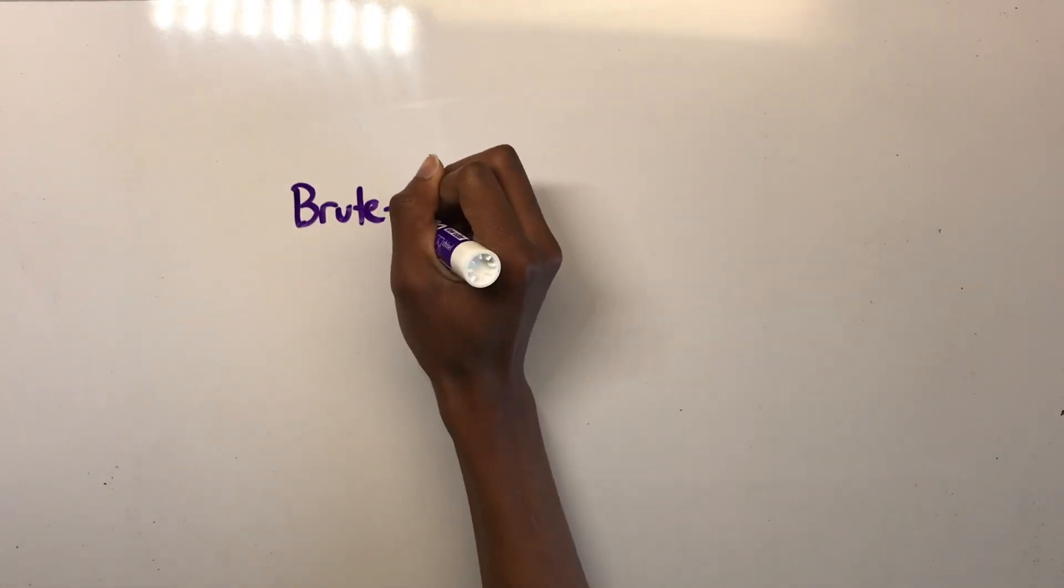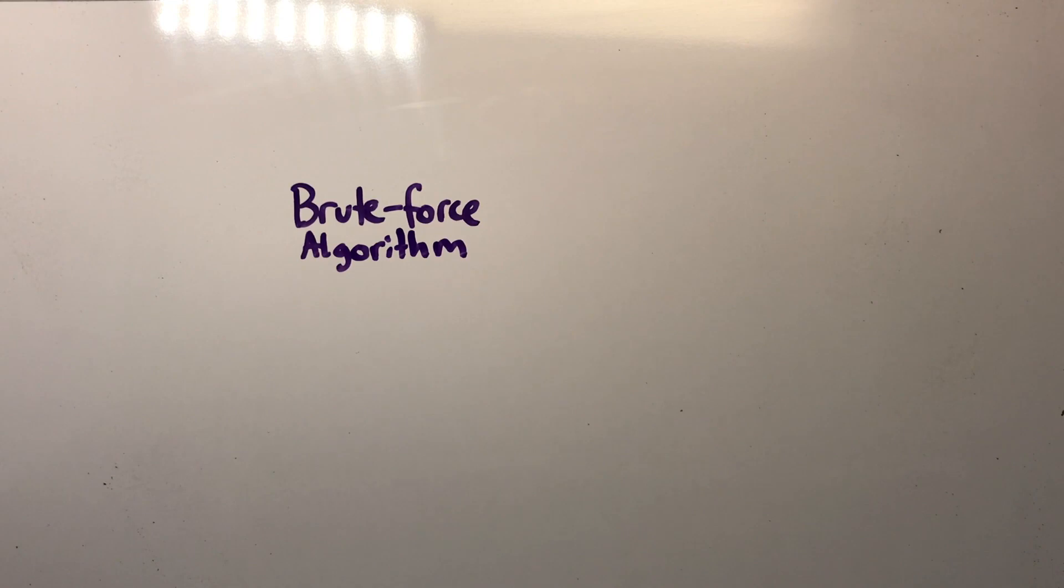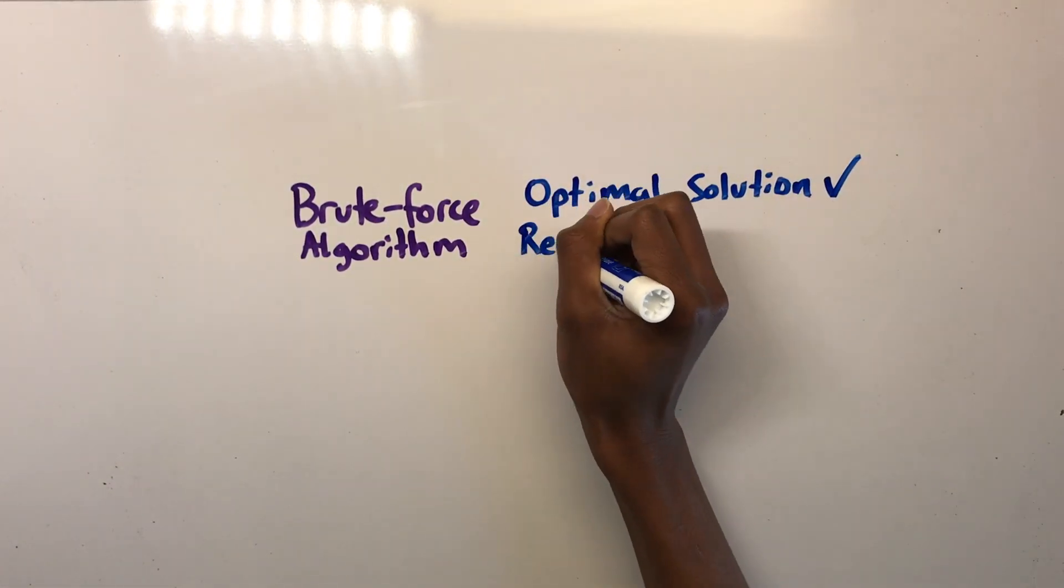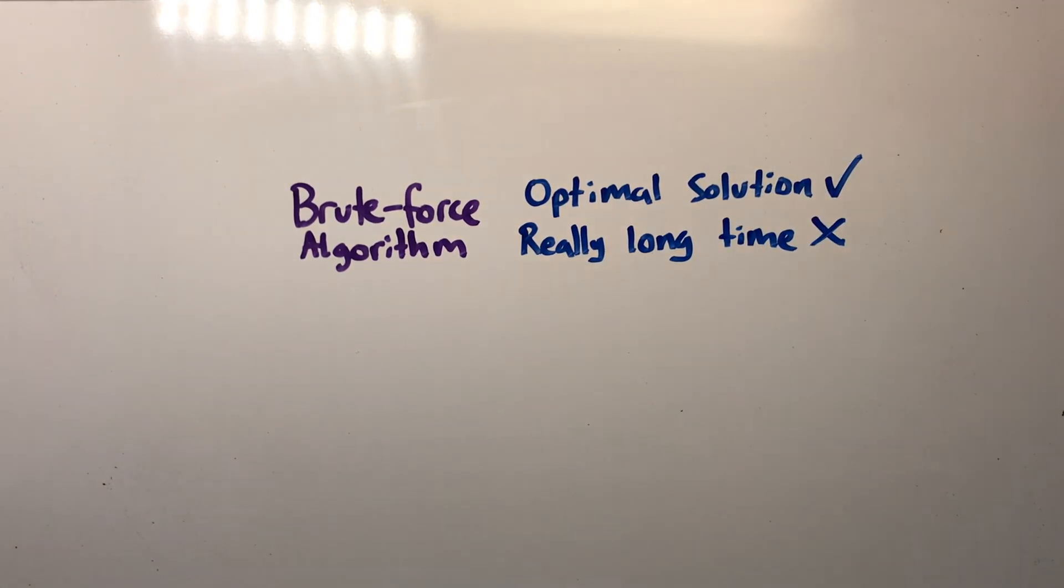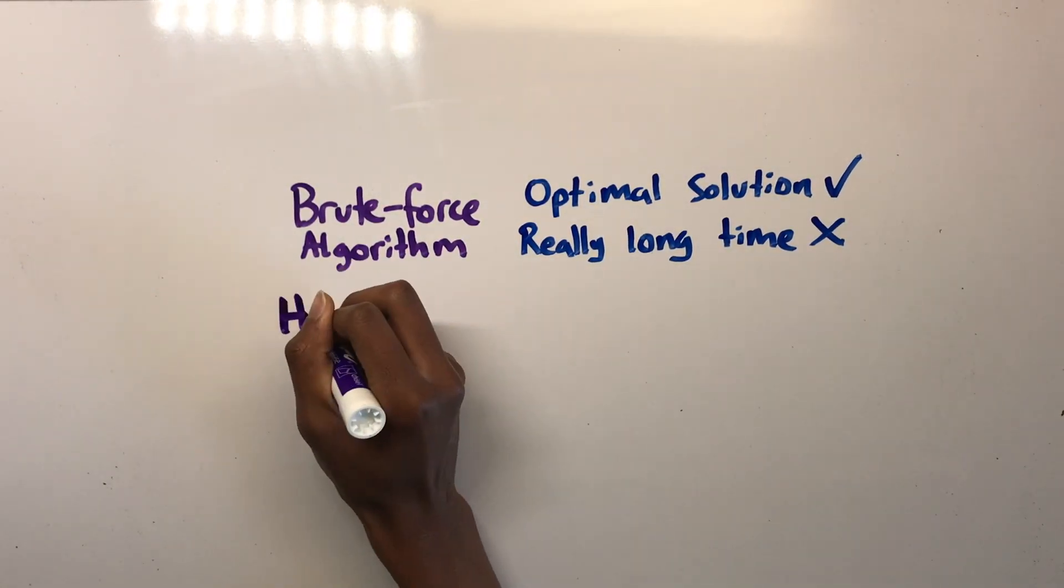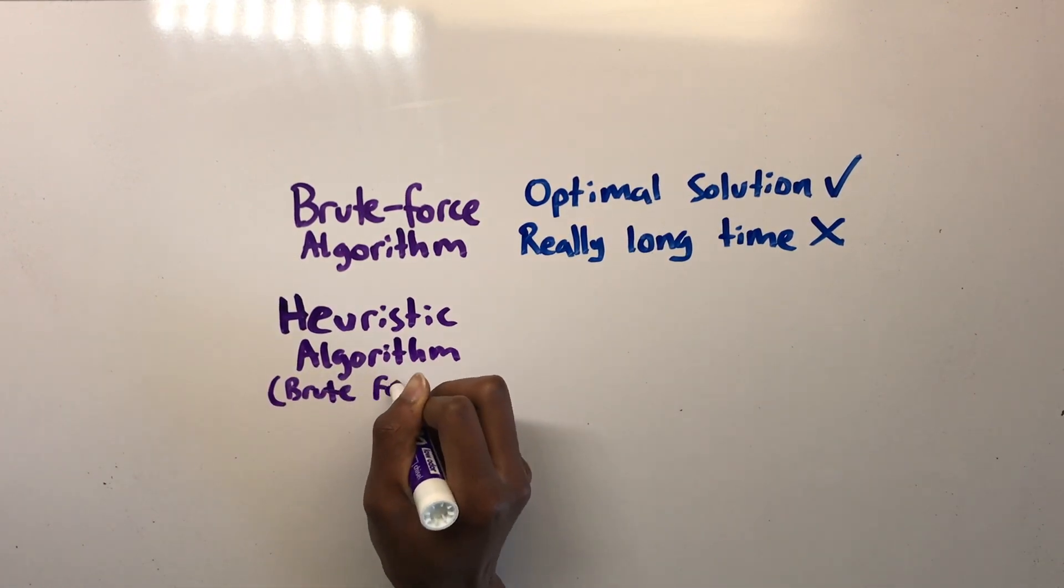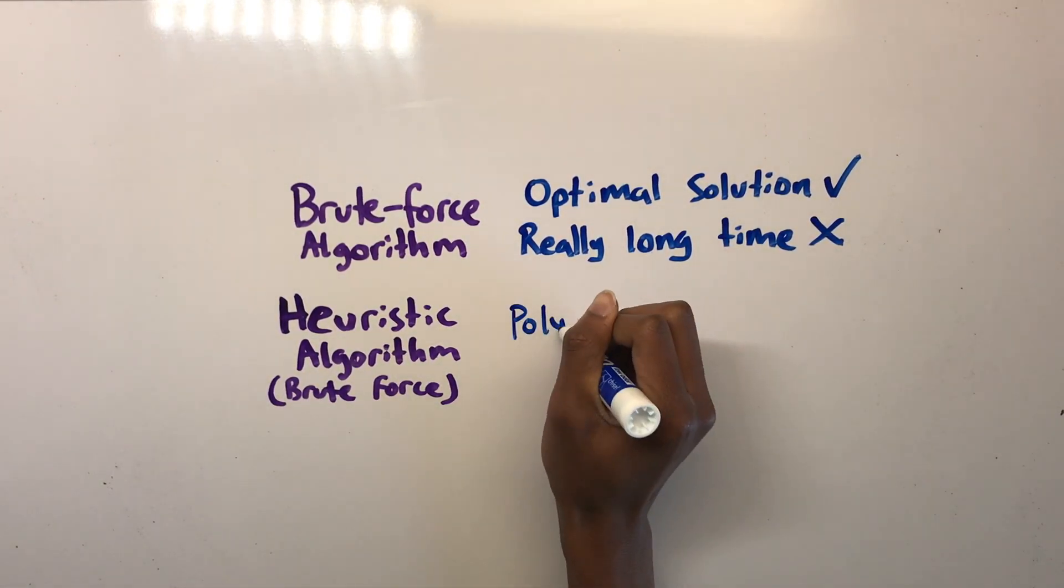Brute force algorithms which are guaranteed to find the optimal solution but have no guarantees in terms of running time and usually take an unreasonably long amount of time depending on how big the problem is. Heuristic algorithms, such as the greedy algorithm, which are guaranteed to run in polynomial time but have no guarantees on the quality of the solution.